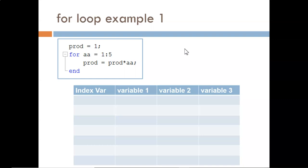Notice that this table looks a little different than the tables we used for while loops. In the leftmost column we list the name of the index variable—in this case it is aa. Then we list all the other variables involved; here that is only the variable named prod, short for product.